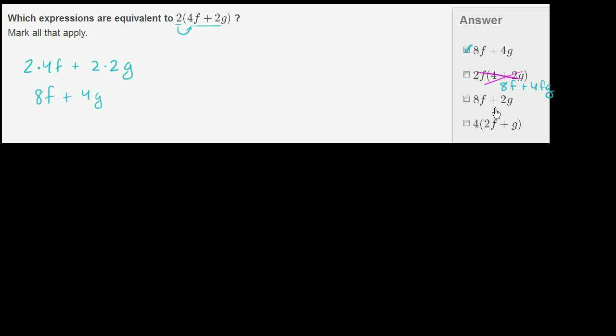And here you have 8f plus 2g. Well, 8f plus 2g we already know is different than 8f plus 4g. And 8f plus 4g is an equivalent expression. And these two things aren't equivalent, so we can cross that out.